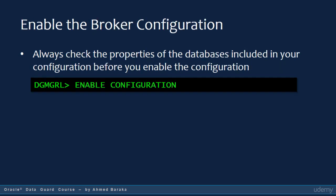We are now ready to enable the broker configuration. It is advised to run SHOW CONFIGURATION and SHOW DATABASE commands before enabling, to verify that everything is configured as intended. To enable the broker configuration, simply run ENABLE CONFIGURATION. Once executed, your Data Guard configuration becomes managed by the broker. The procedure is straightforward.